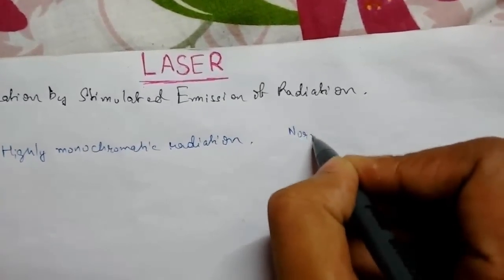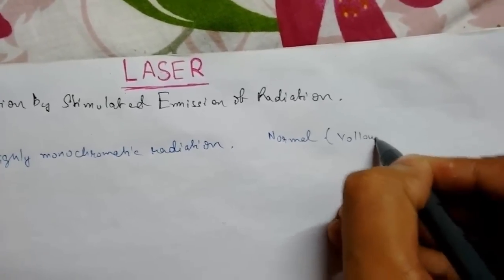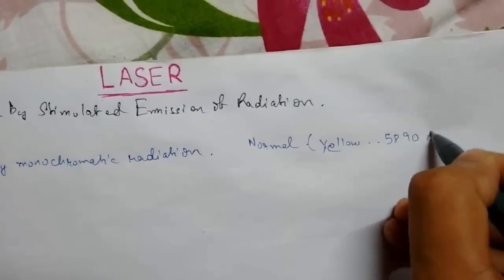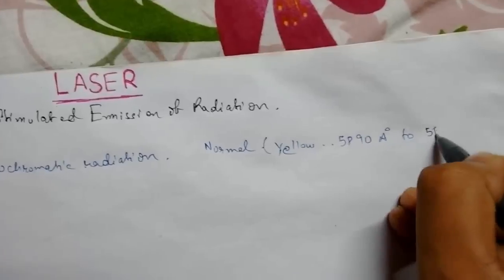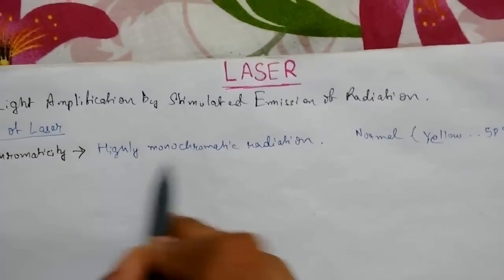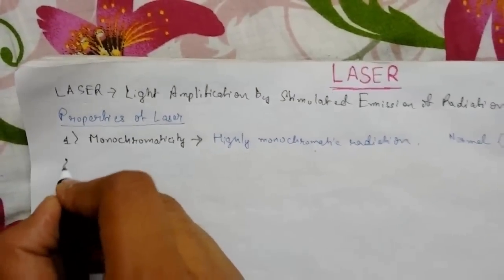For normal light, for example yellow, it has wavelengths of 5890 angstrom to 5893 angstrom. It has a range, but laser is highly monochromatic.